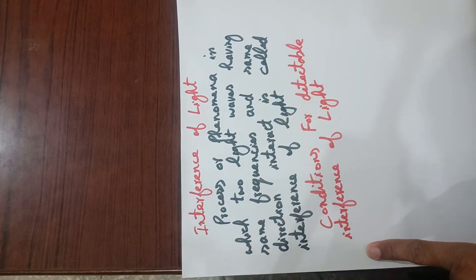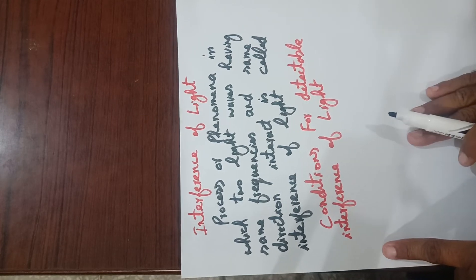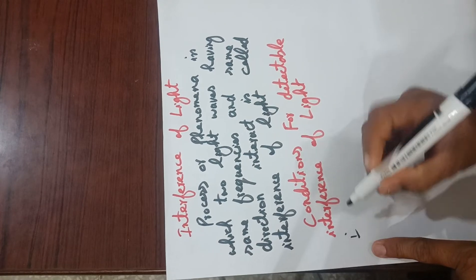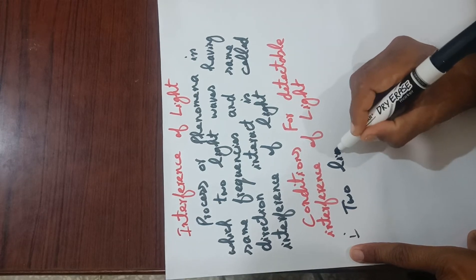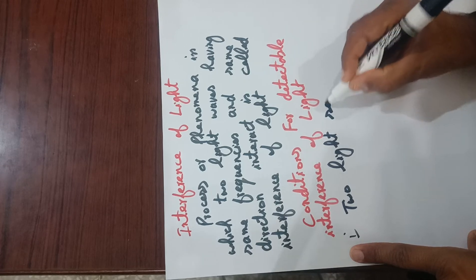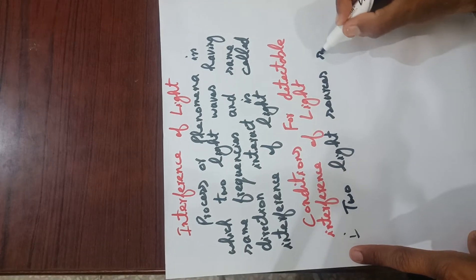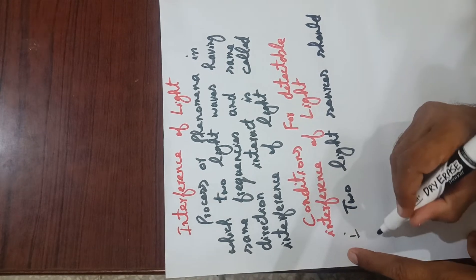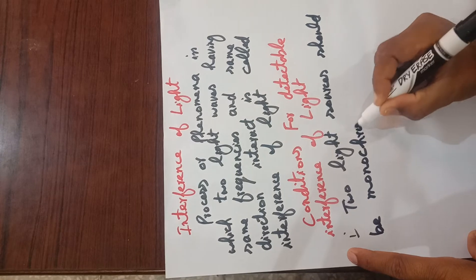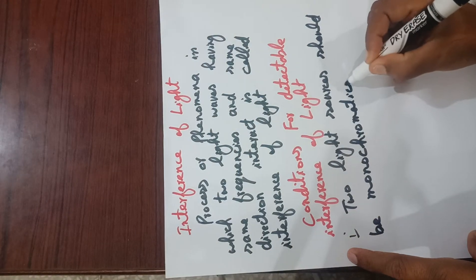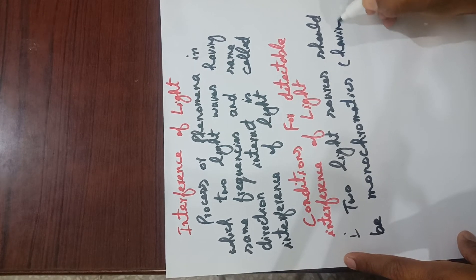There are two conditions for detectable interference of light. The first condition is that two light sources or light beams emitting light rays should be monochromatic. Monochromatic means having the same color, same frequency, and same wavelength.